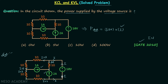Let's apply KVL. We start from this point, moving in the direction of current I. We have one source providing 10 volts — the potential is rising, so we take the positive sign: plus 10 volts. Then we have one resistor; in the same direction as the current, the resistor gives a drop in potential, so we have a negative sign and the voltage drop equals resistance multiplied by current: 1 multiplied by I plus 3, giving minus (I plus 3).